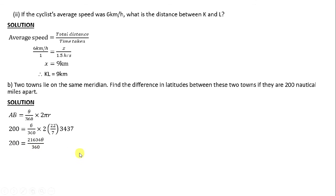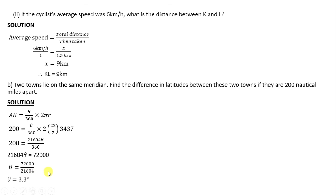We cross multiply. Multiplying 200 times 360 gives 72,000. To find theta, we divide both sides by 21,604. Dividing 72,000 by 21,604, we find that theta equals 3.3 degrees. So the difference in latitudes between the two towns was 3.3 degrees.